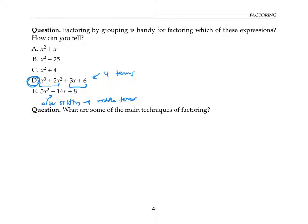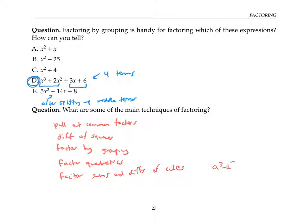So let's just review what are the main techniques of factoring. We saw these on the previous page. We saw there was pull out common factors, there's difference of squares, there's factoring by grouping, there's factoring quadratics. And one more that I didn't mention is factoring sums and differences of cubes. That uses the formulas: a cubed minus b cubed is a minus b times a squared plus ab plus b squared, and a cubed plus b cubed is a plus b times a squared minus ab plus b squared.